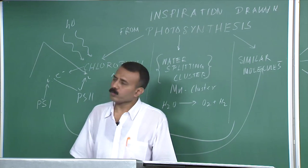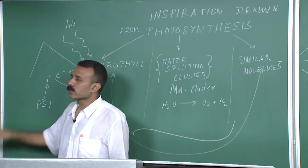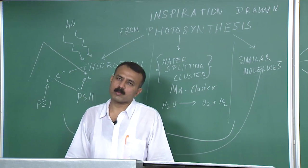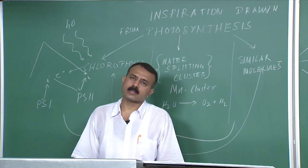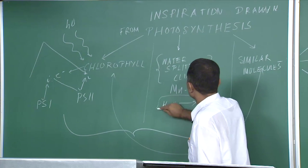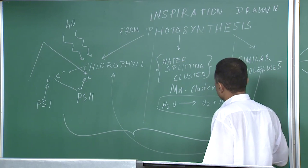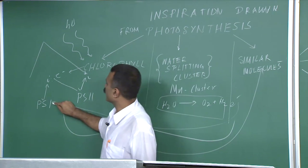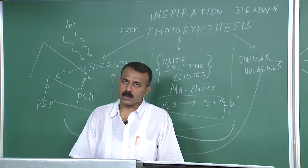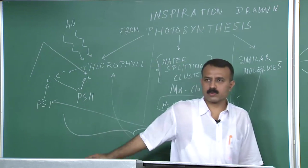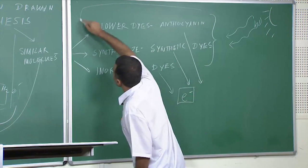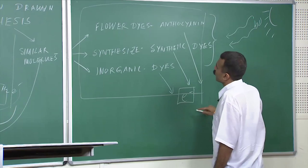The second electron ejected by another chlorophyll molecule sitting in another photosystem brings this electron-devoid chlorophyll molecule back to its ground state. But when it does so, the second chlorophyll molecule loses an electron, so it also has to be brought back to its ground state. It is brought back by the process where electrons are ejected, and this electron brings the other one back into its ground state.